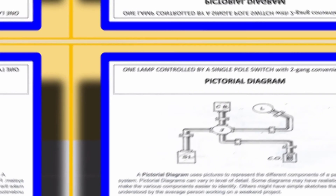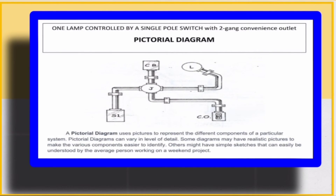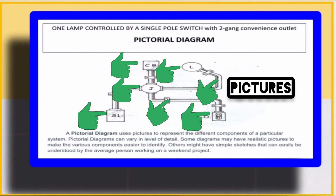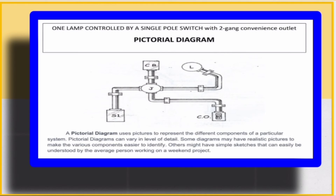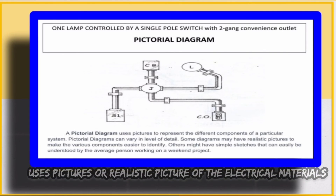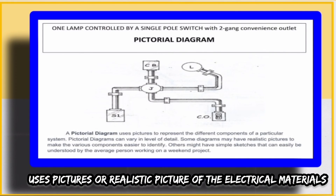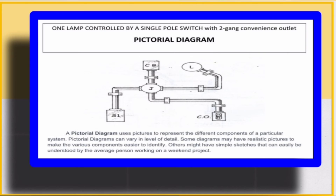The interpretation of the last diagram is one lamp controlled by a single pole switch with a two-gang convenience outlet. A pictorial diagram uses pictures to represent the different components of a particular system. Pictorial diagrams can vary in level of detail. Some diagrams may have realistic pictures to make the various components easier to identify. Others might have simple sketches that can easily be understood by the average person working on a weekend project.